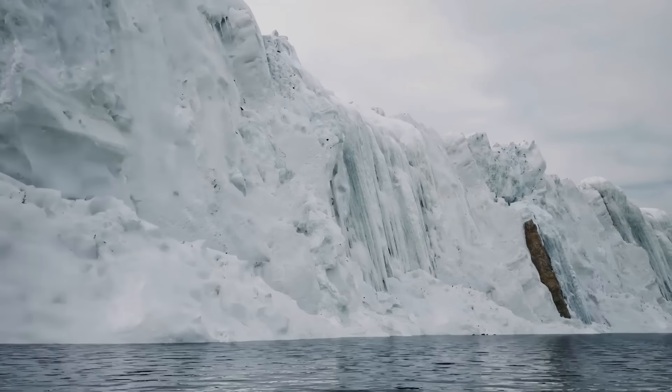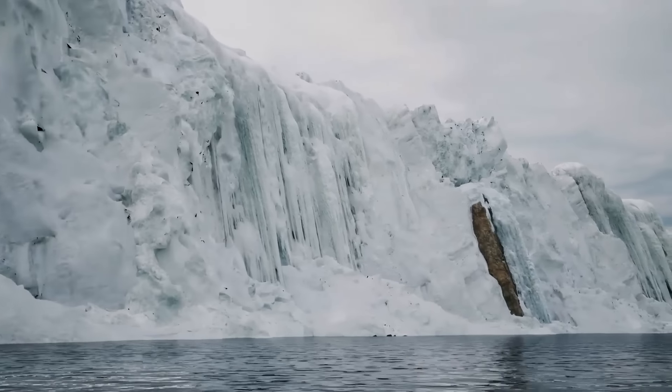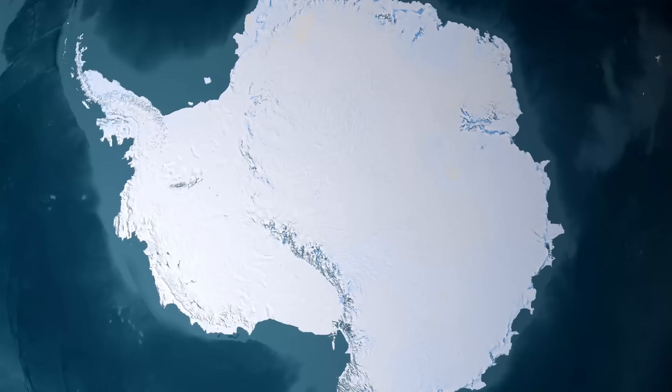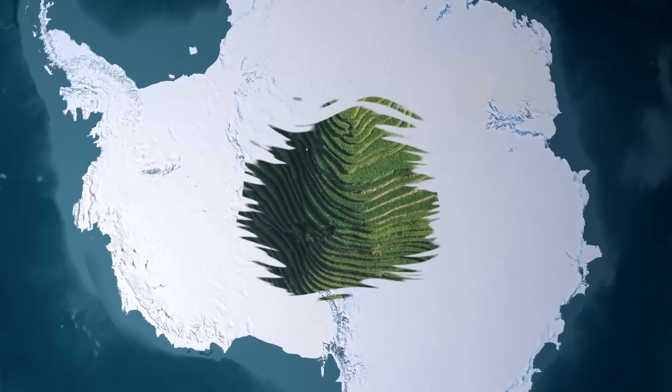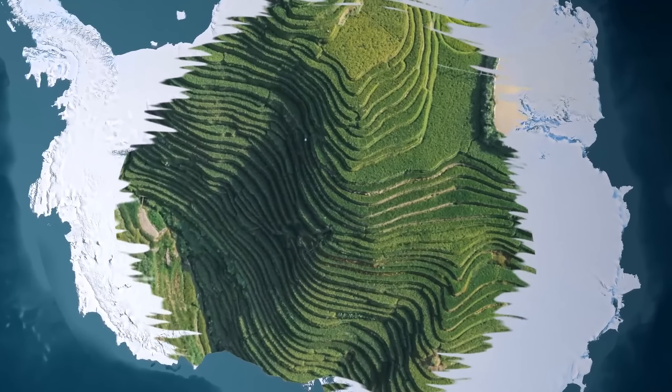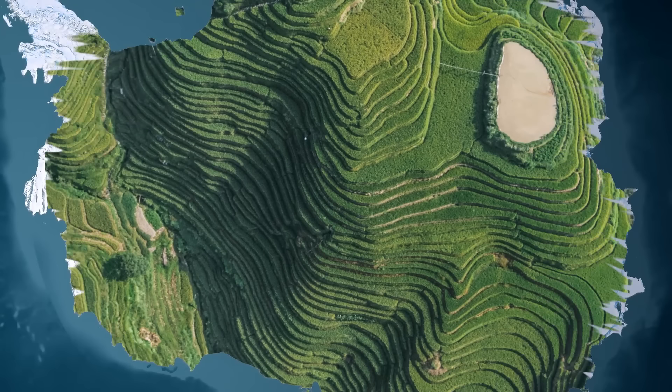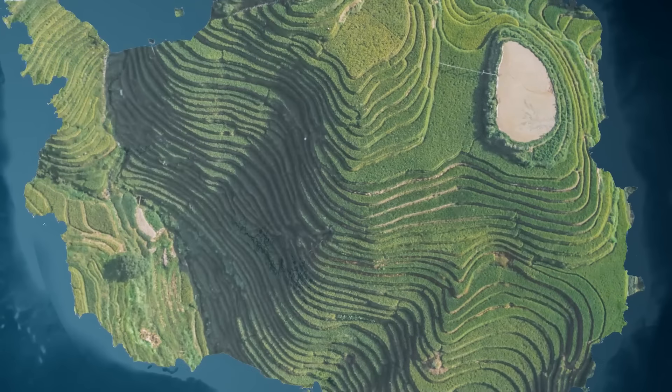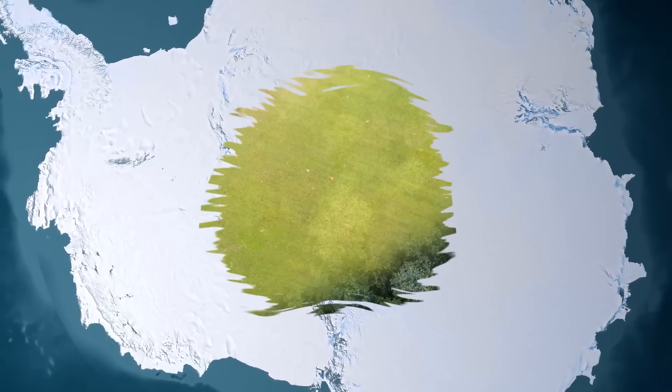But have you ever wondered what Antarctica would look like if there were no ice? It may seem unimaginable now, but it was not always covered by ice. That was 34 million years ago, though. So nobody could tell how the continent's surface would be without the ice.